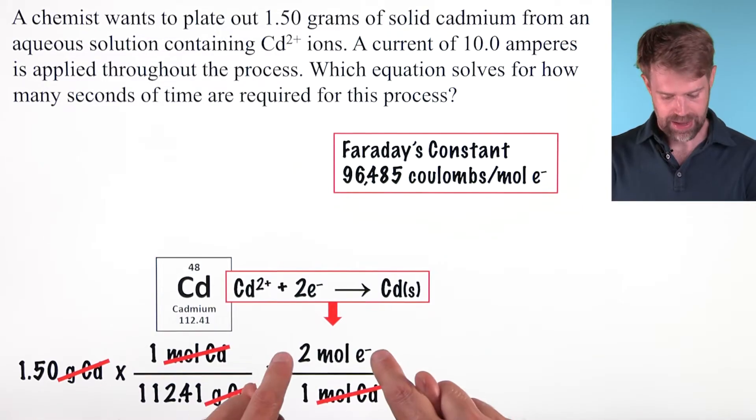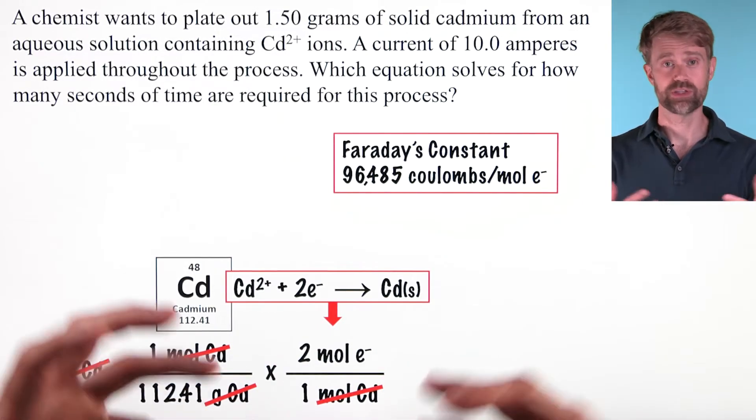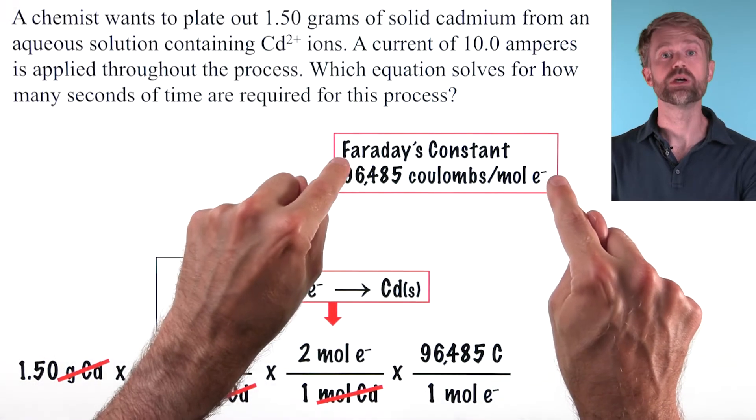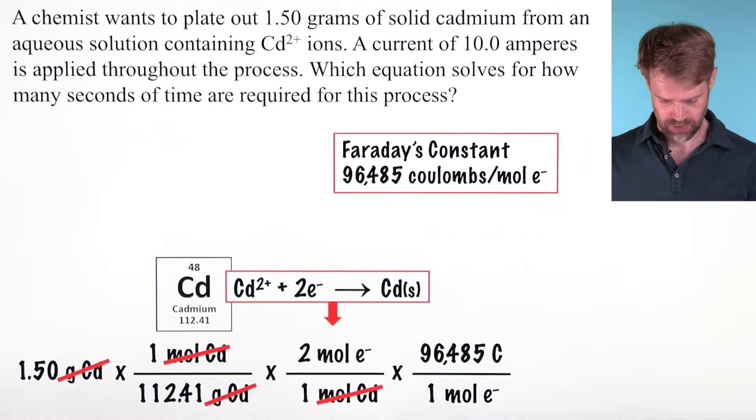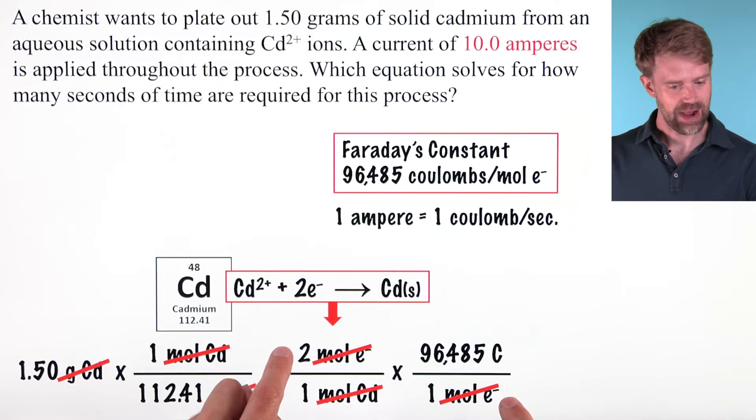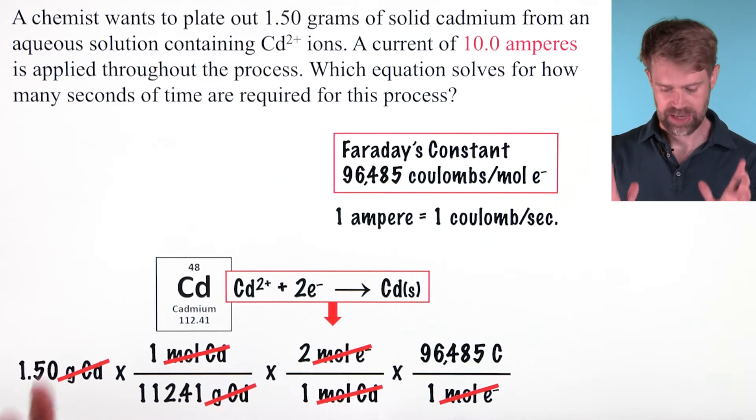Now we have moles of electrons. We're getting closer. Now it's time to use Faraday's constant, which is going to let us go from moles of electrons to coulombs. We set it up so that moles of electrons cancel.